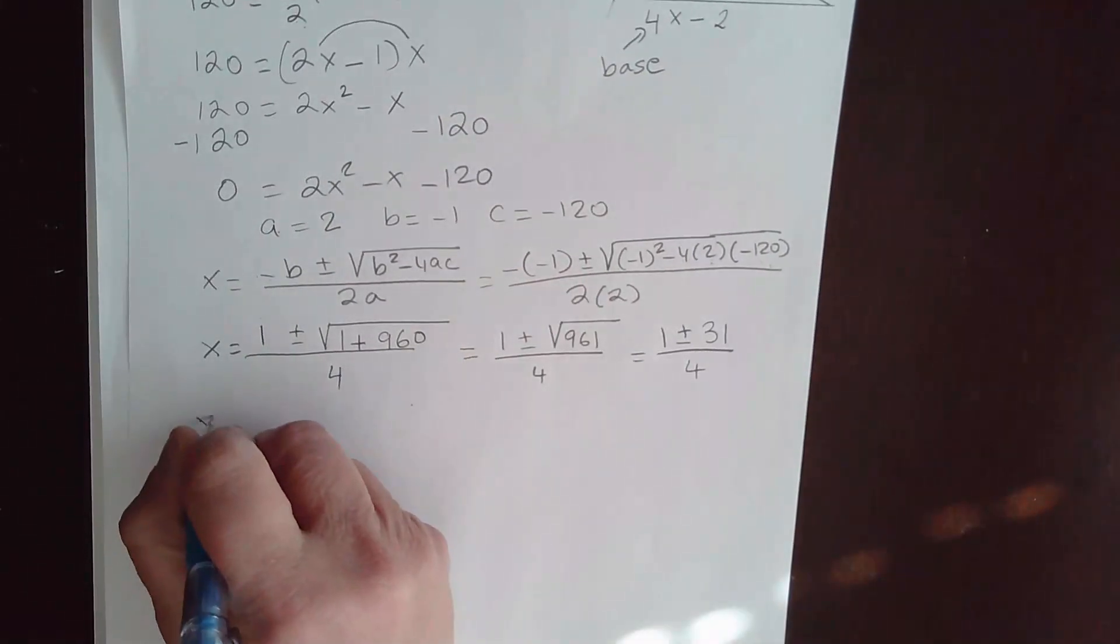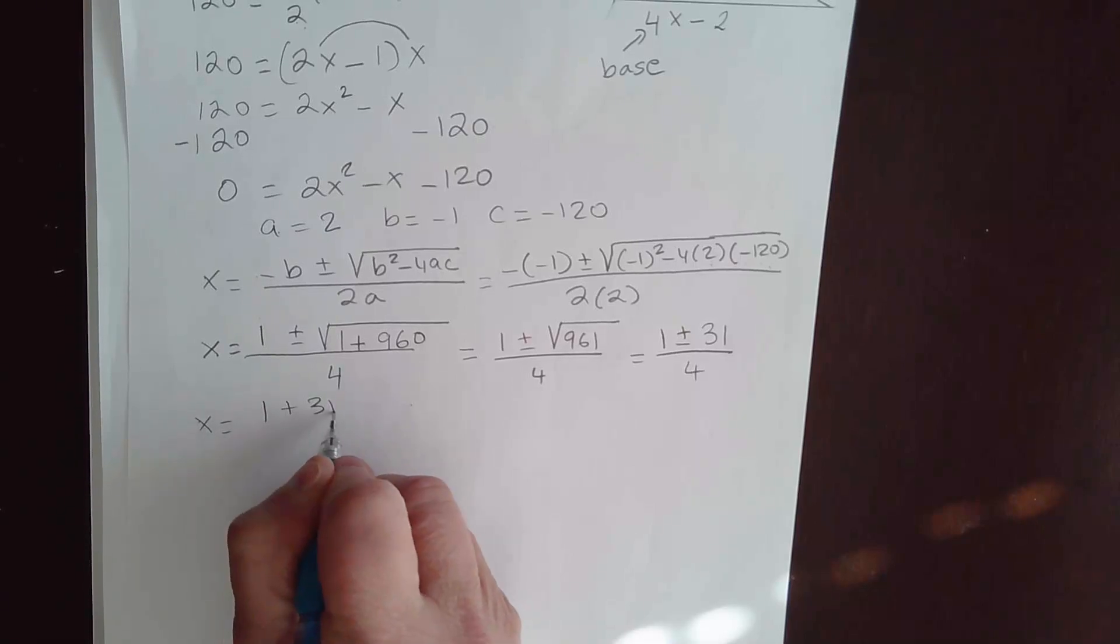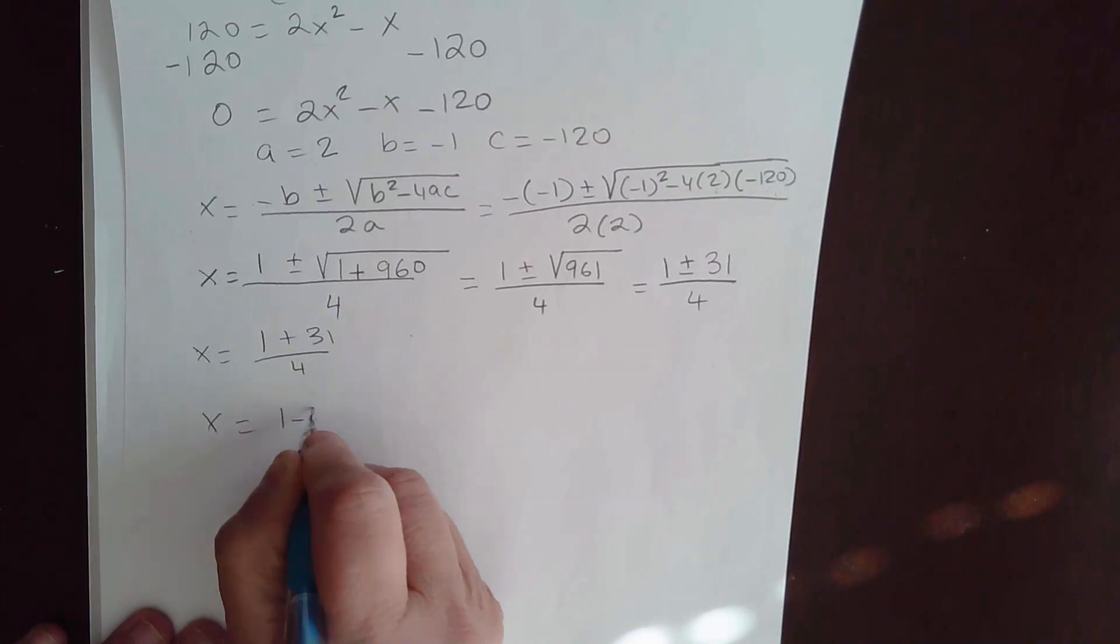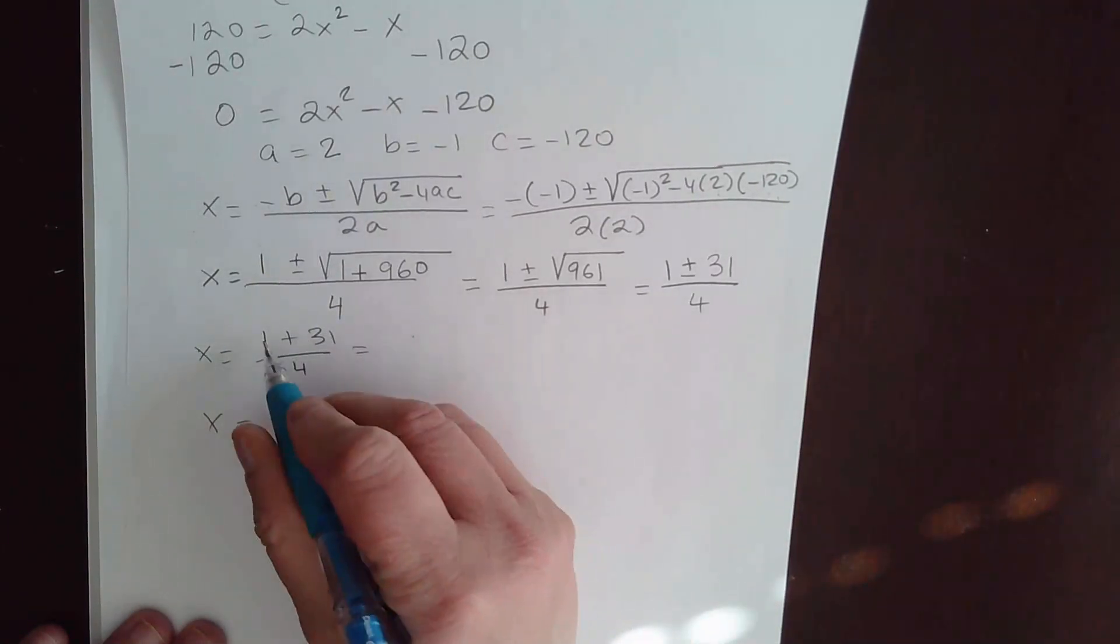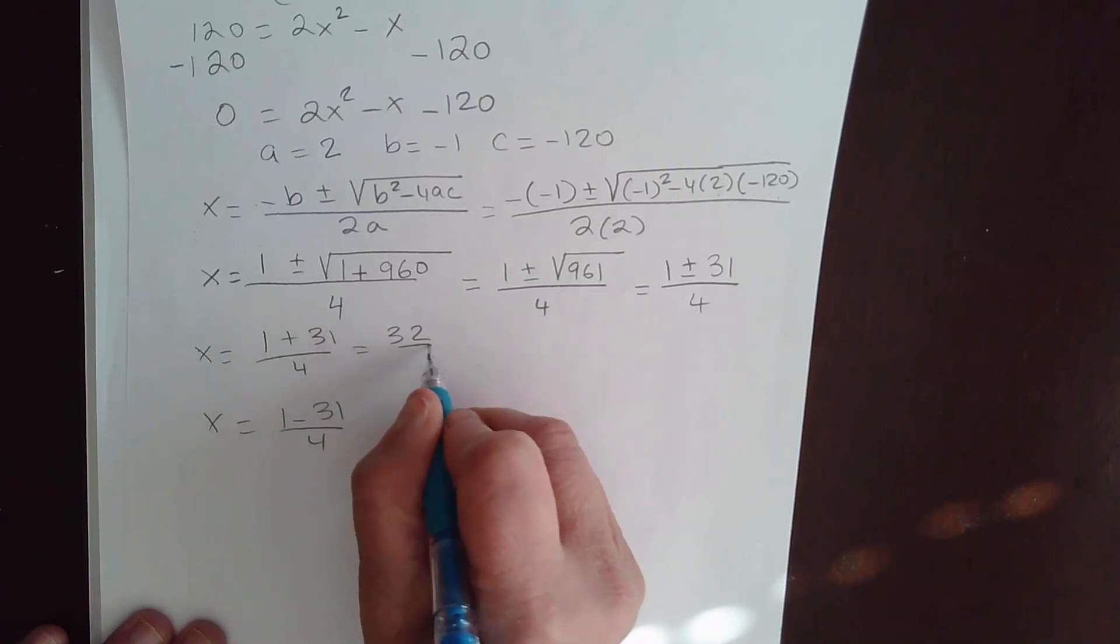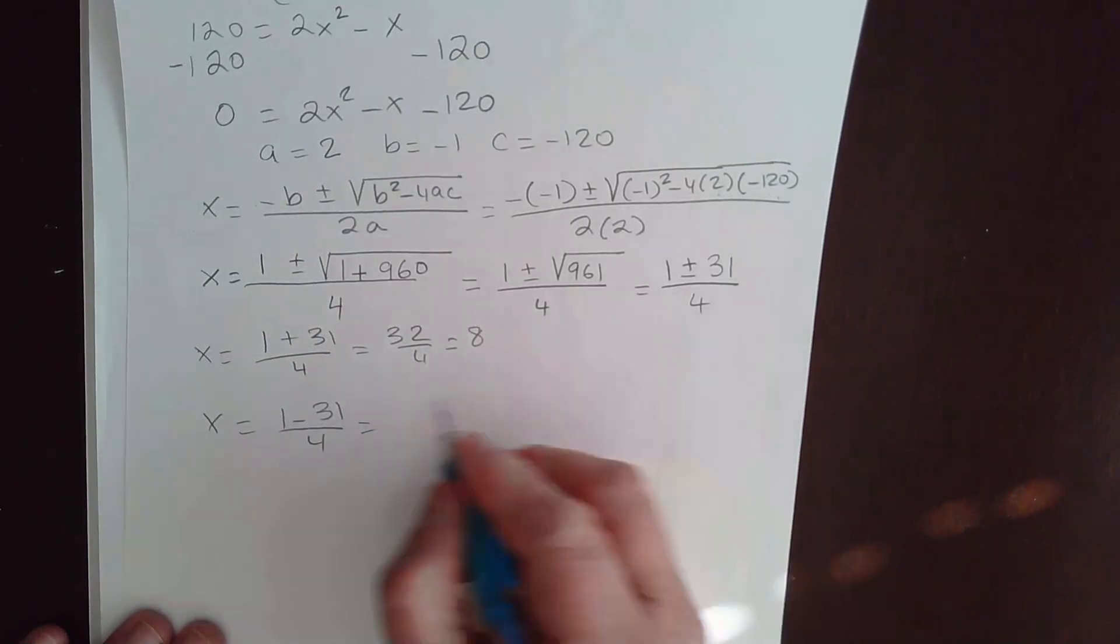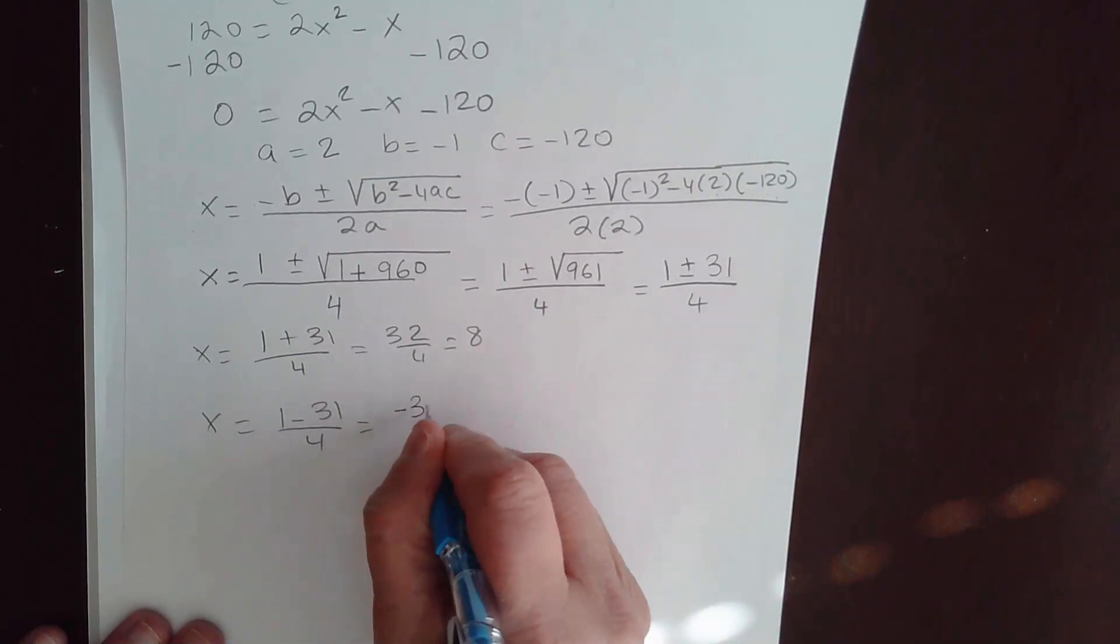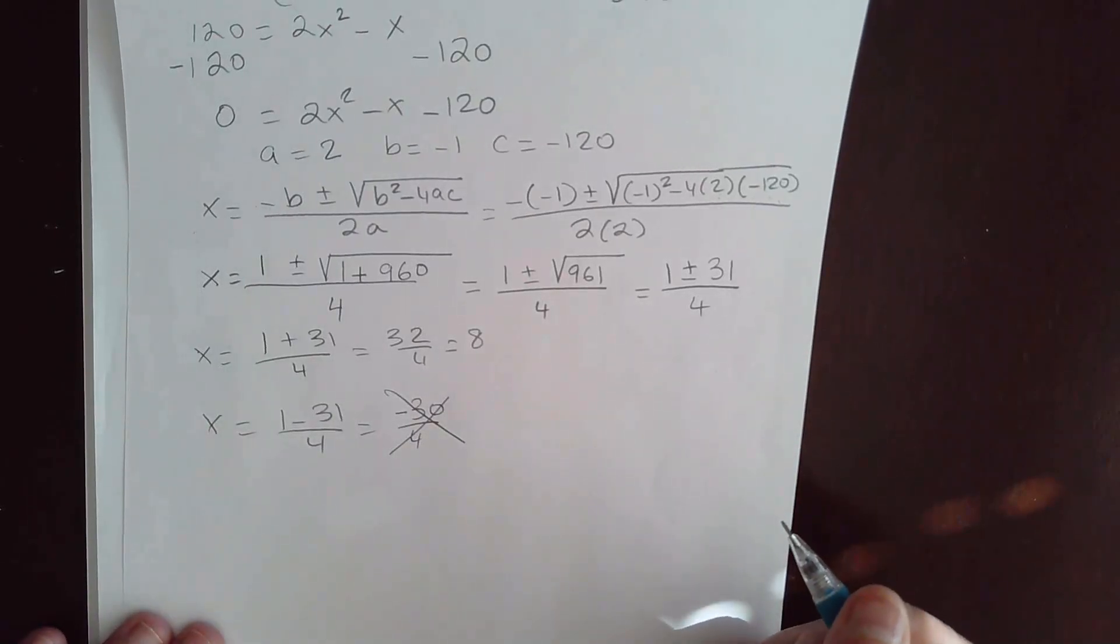So again, I have two answers. X is 1 plus 31 over 4. And 1 minus 31 over 4. So that's going to give me 31 plus 1. That's 32 over 4, which is 8. And I'm looking at it. This is not a possibility. It's going to give me a negative answer. Negative 31 plus 1 is negative 30 over 4. It's not possible. We cannot have the height equal to a negative number.